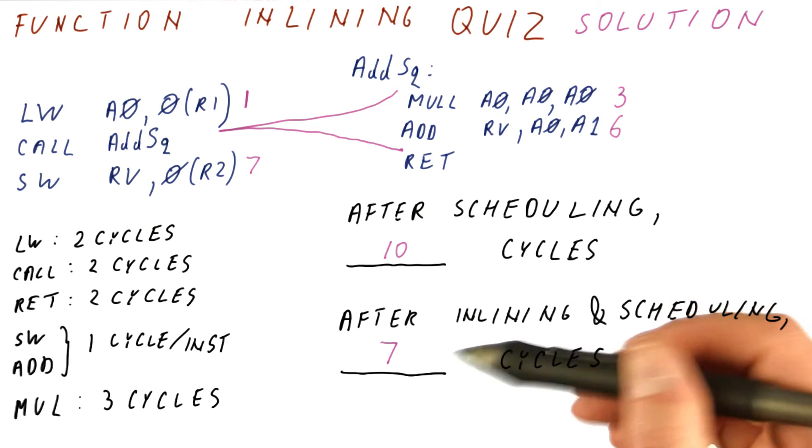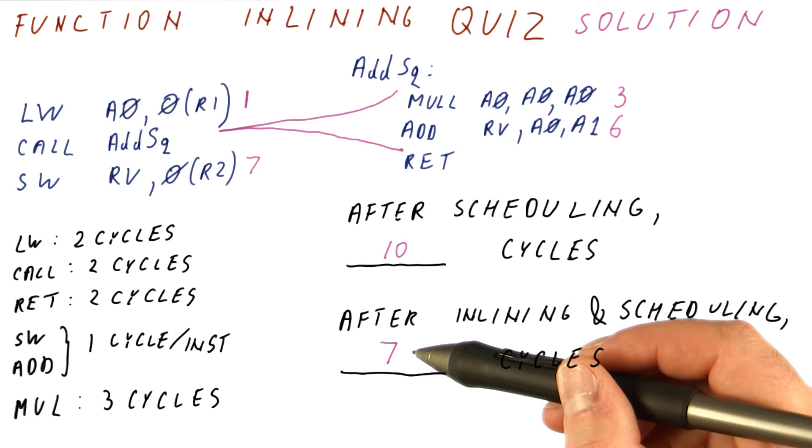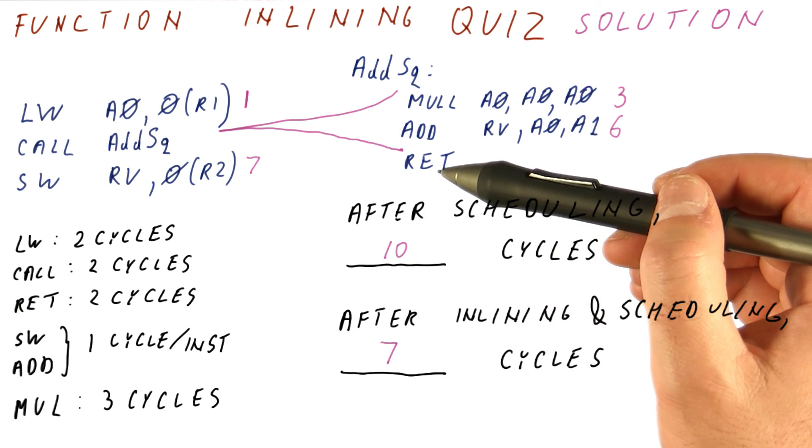So after inlining and scheduling, we have reduced this to seven cycles, mainly by eliminating the call and the return.